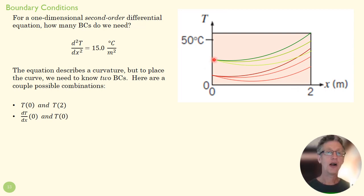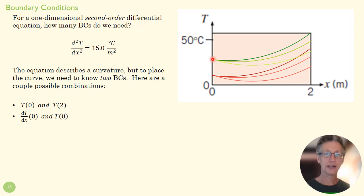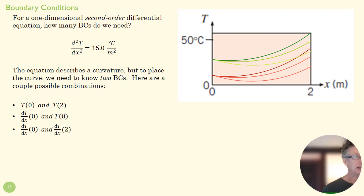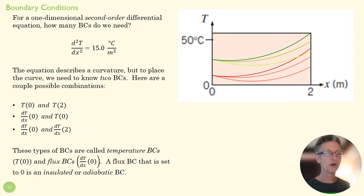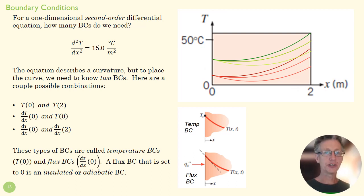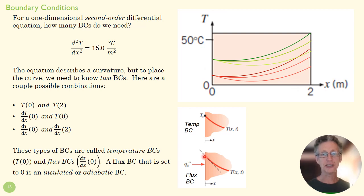We could know the slope at x equals zero and the temperature at zero — if I'm headed in a certain direction and starting at a given temperature, there's only one curve that matches those two things. So it could be a flux BC, two flux BCs, two temperature BCs, or a flux and a temperature — all of those turn a general solution into the particular solution we want. A temperature BC tells us what the temperature is at that boundary; a flux BC tells us what dT/dx — the slope of the temperature field — is at that boundary.